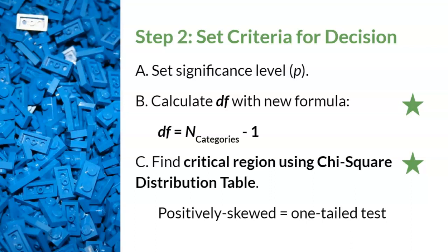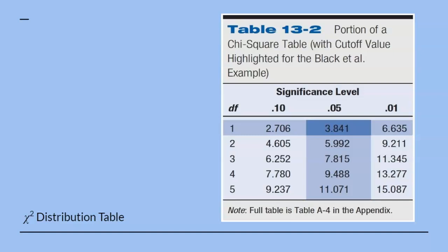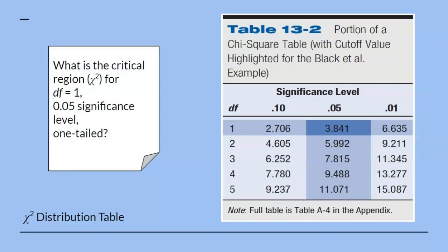The chi-square distribution table is organized with a column for df and columns for significance levels. Since chi-square is always positively skewed, there are no options for a two-tailed test because it will always be one-tailed. There are common mistakes that students can make while reading this table. To read it: first find the degrees of freedom, second find the significance level, and third find the answer where these two columns meet. The critical region will be different for each hypothesis test because it's based on the number of categories in the study. The number one mistake students make is writing a critical region of plus or minus chi-square — it just cannot be.